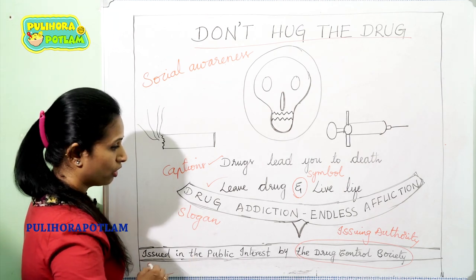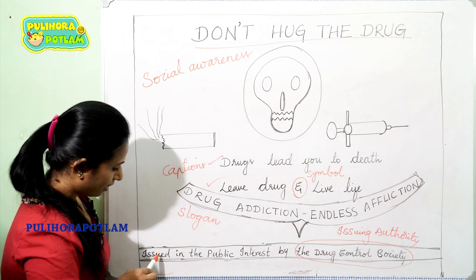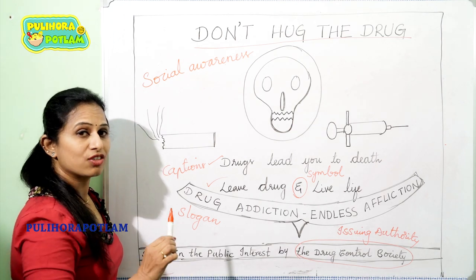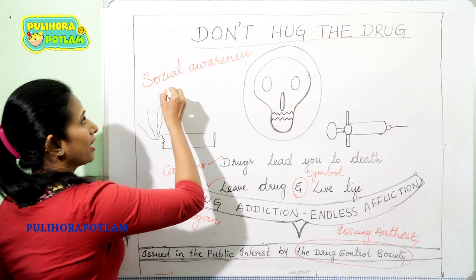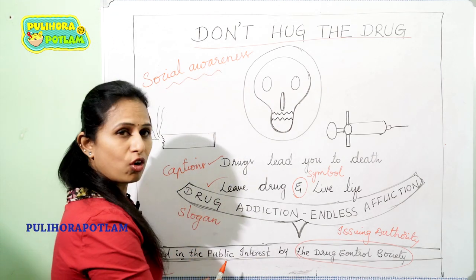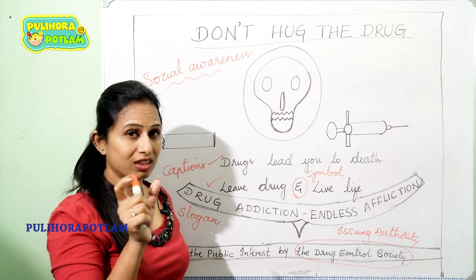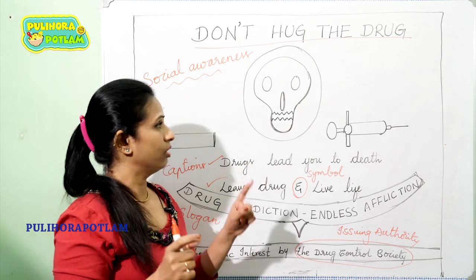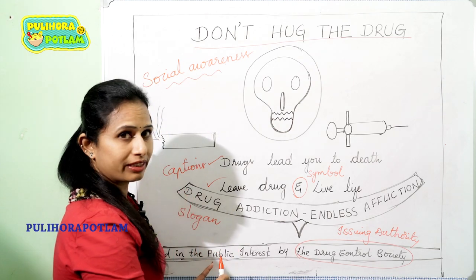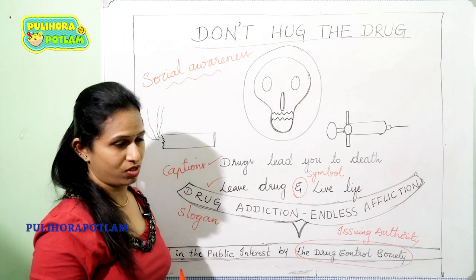As soon as this is completed, draw a box — I mean close the box. 'Issued in the public interest by the Drug Control Society' must be written when you are drafting a poster bringing social awareness among the people. For other posters, you are not supposed to write this. You need to write only the address of the person or the organization promoting the sales. This has to be mentioned only for social awareness posters.